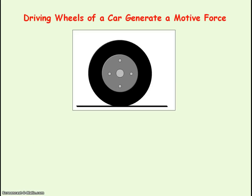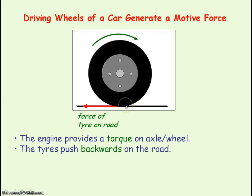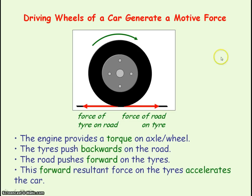An application of Newton's Third Law of Motion is how the driving wheels of a car generate a motive force. The engine provides a torque — a turning force — on the axle or wheels. The tyres exert a backwards force on the road, and from Newton's Third Law, the road exerts a forward force on the tyres. It is this forward force on the tyres that produces the motive force that accelerates the car.